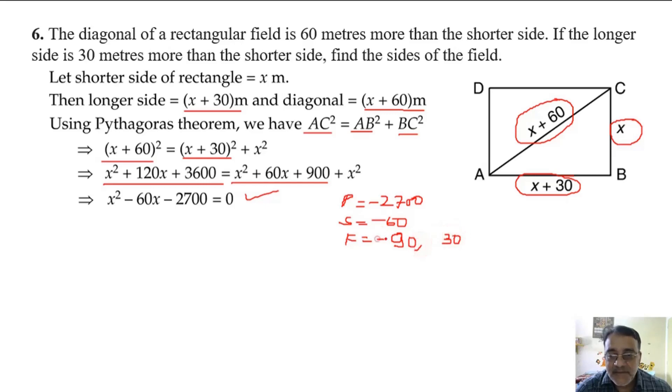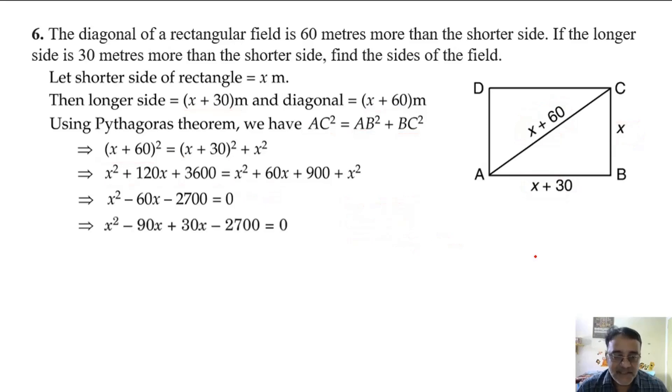The sum's sign is on the larger number and the other has the opposite sign. So we will split minus 60 as minus 90 plus 30.